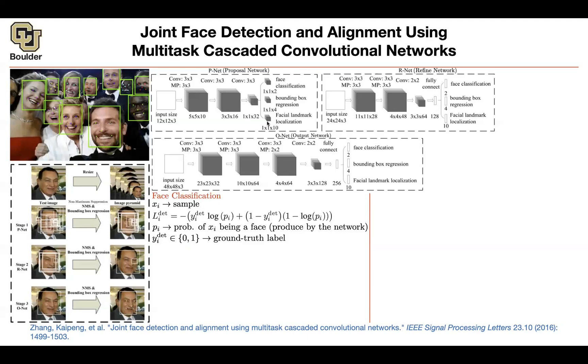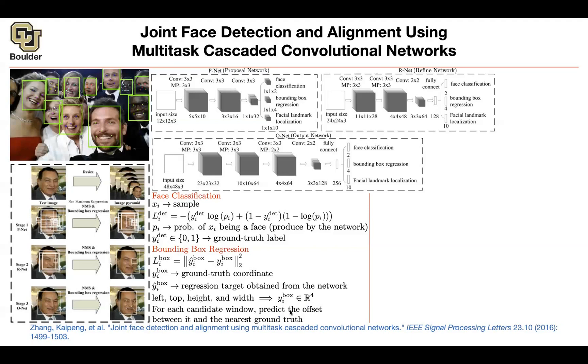For bounding box regression, you're adjusting the coordinates of your predicted box compared to the ground truth. This is your ground truth, your box coming out of your neural network—the top left and the height and width of your box, which are adjustments to the nearest ground truth.